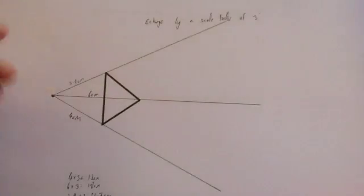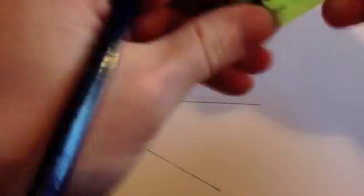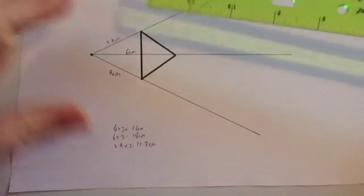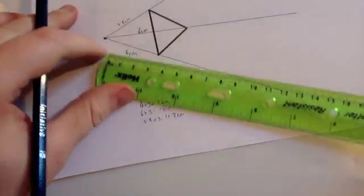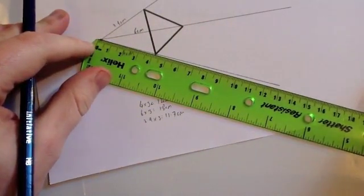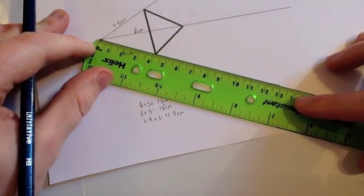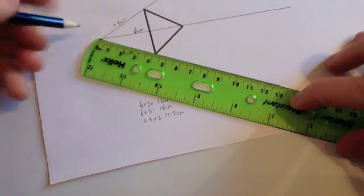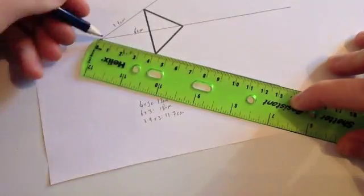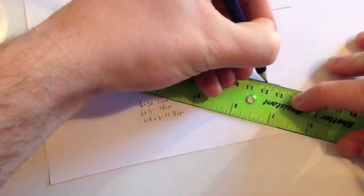For each of these points, we're just going to mark the distance. This distance that we need for a scale factor of 3, so 12 centimeters. Go back to the center of enlargement, make sure the zero is on the center of enlargement. Because this was 4 centimeters, we want to now go to 12. So 12 from zero would be here.